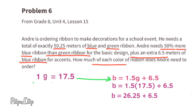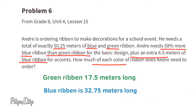The amount of blue ribbon is 1.5 times 17.5, which equals 26.25, plus the extra 6.5 meters for accents, giving a total of 32.75 meters of blue ribbon. So Andre needs 32.75 meters of blue ribbon and 17.5 meters of green ribbon, which totals 50.25 meters.